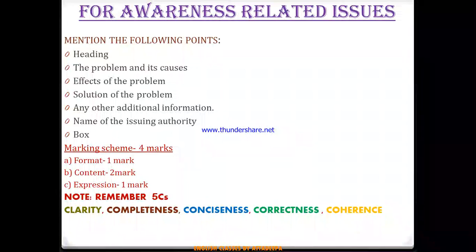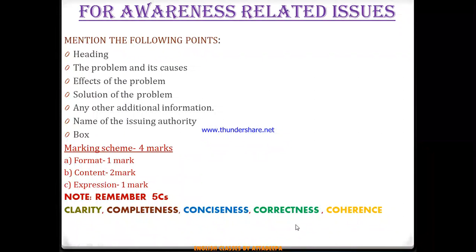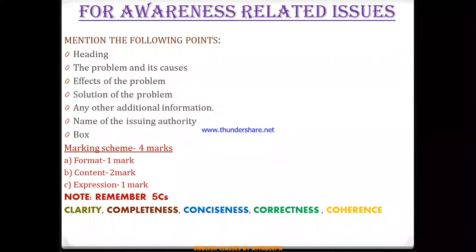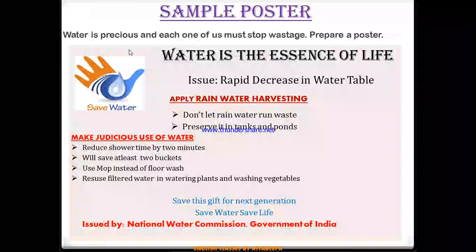Third is conciseness — write in a compact way; it should not be so lengthy or elaborated that the reader gets bored. Fourth is correctness — the language you use should be correct and should not be ambiguous or create improper meaning. Fifth is coherence — your ideas should match and relate to each other; the first idea and the next idea should not be abrupt but should go alongside. Coherence is the matching of ideas.